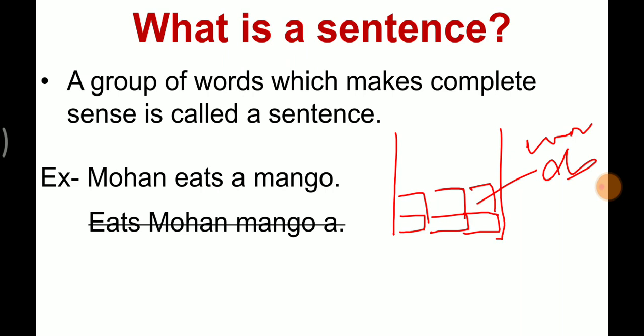For example, 'Mohan eats a mango.' Here you can see these are all different words — a group of words arranged in a certain pattern. This is called a complete sentence. 'Mohan eats a mango' means that Mohan eats a mango. A group of words must be arranged to give a complete sense for it to be a sentence.